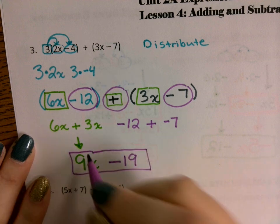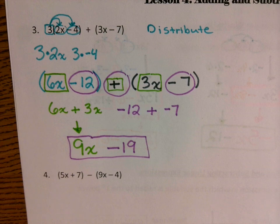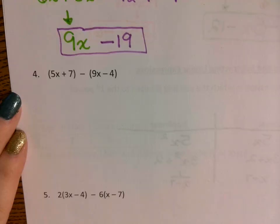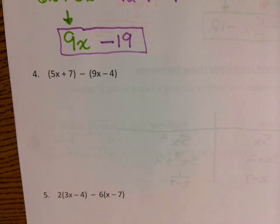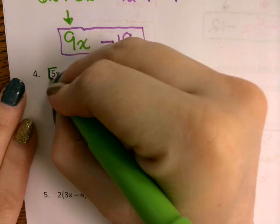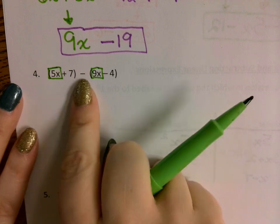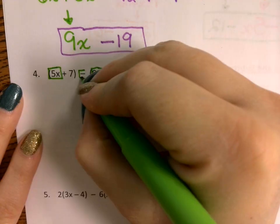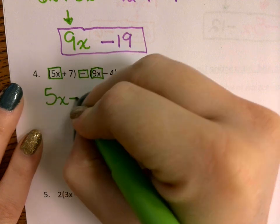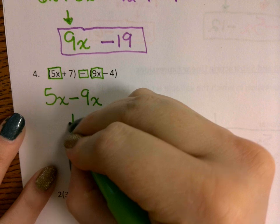Try number 4 on your own. The first set of like terms in the green box is 5x and 9x, and the operation between the parentheses is subtraction. So we do 5x minus 9x, which gives negative 4x. Good — everyone should have negative 4x so far.